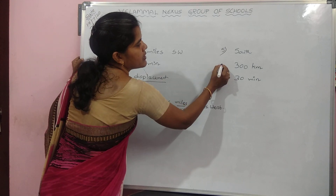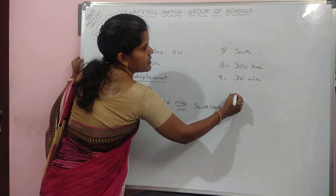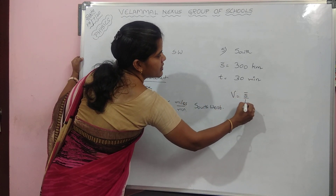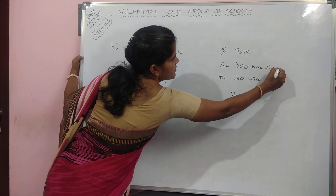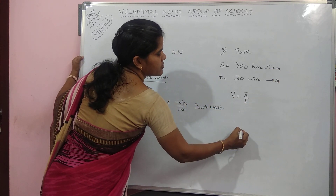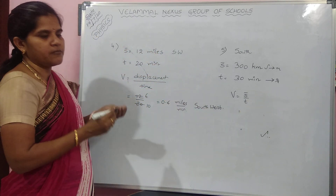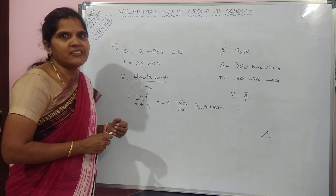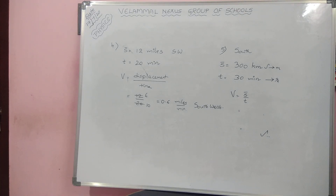This is a straightforward problem. Displacement by time gives velocity. You need to convert kilometers to meters and minutes to seconds, then substitute the values, cancel, and you will get the answer. Try it at home. I hope you understood all the numericals. Thank you children.